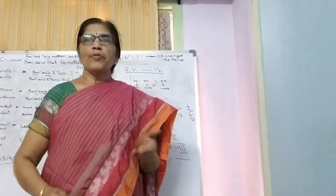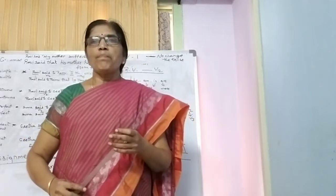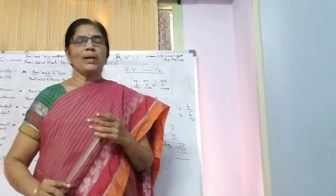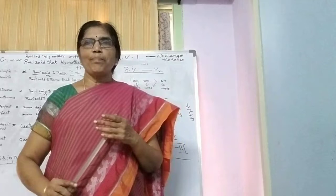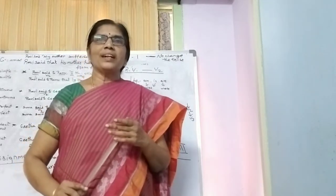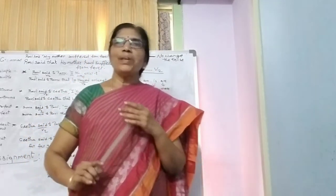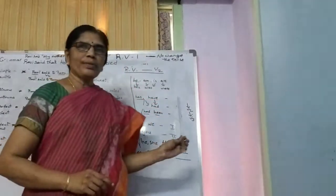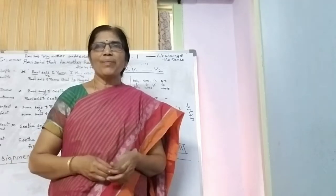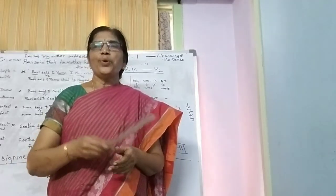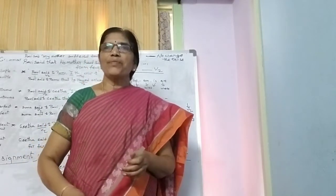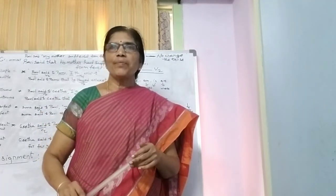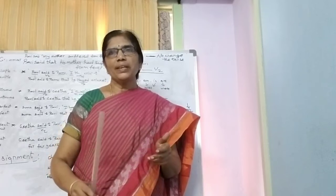B1 and B2 forms are there. Suppose if I say there is a verb 'is' — that is a B form. 'You are' — 'are' is a B form. 'I was absent yesterday' — 'was' is a B form. 'I am a teacher' — 'am' is a B form. We use B forms in both present tense and past tense. B forms used in present tense we can call B1, and B forms used in past tense we can call B2. What comes under B1? Am, is, are.